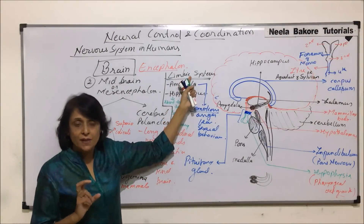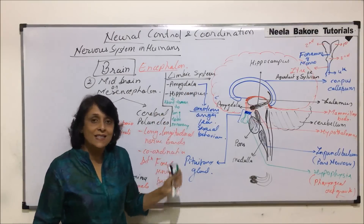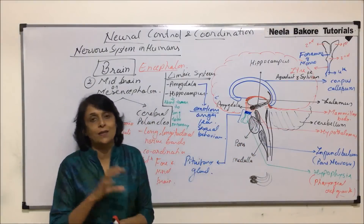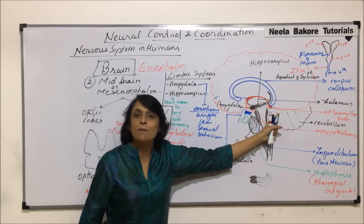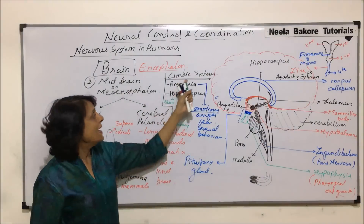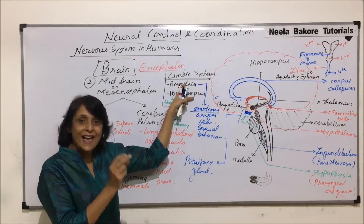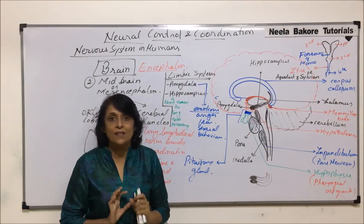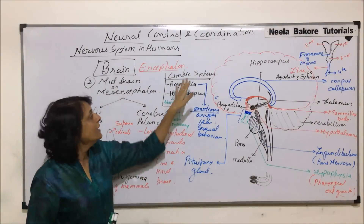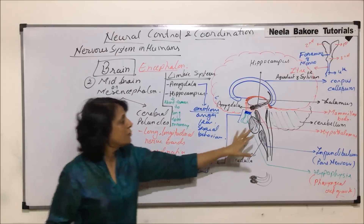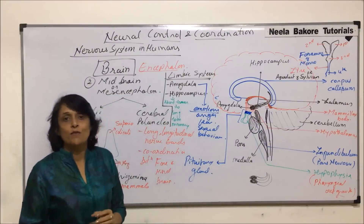So, amygdala is mainly responsible for emotions and hippocampus is mainly for converting short-term memory into long-term memory. This is the limbic system, with two main parts: amygdala and hippocampus. The other parts — thalamus, hypothalamus, and mammillary bodies — are also associated with it. The limbic system is not a separate system; it has two structures along with other parts of the forebrain. Now we are done with the forebrain, midbrain, and limbic system. In the next part, we will take up the hindbrain and see all three of its parts and their individual functions.